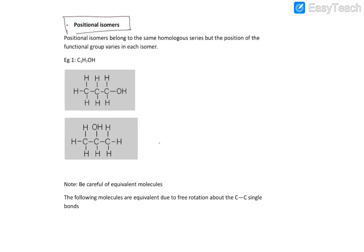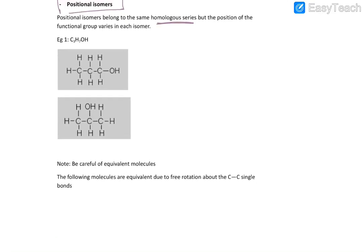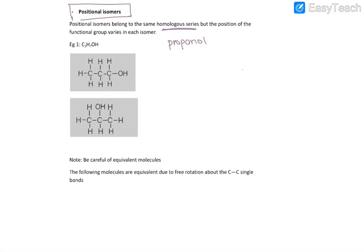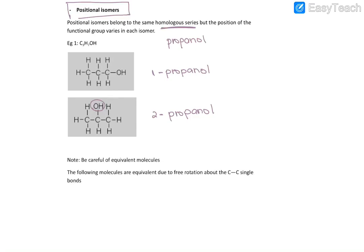The next type of isomers are called positional isomers. Positional isomers are from the same homologous series — the same class of compounds — but the position of the functional group varies in each isomer. In this case, these are both propanol molecules but the placement is different. This is one-propanol and this is two-propanol. It's important to specify where the OH is so that we know which positional isomer it is.